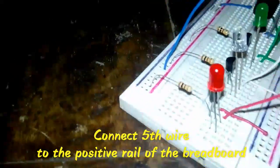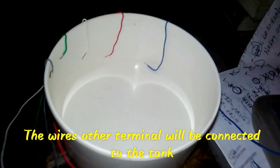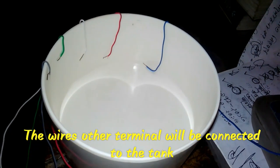Connect the fifth wire to the positive rail of the breadboard. The wire's other terminal will be connected to the tank.